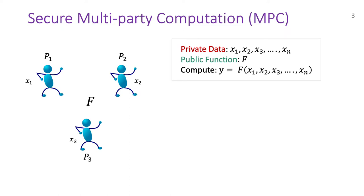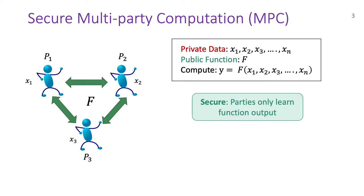Secure inference is a particular instance of MPC in the two-party context. In MPC, there are two or more parties which have some private inputs and they want to compute a public function F. MPC lays out a series of interactions between these parties and provides a mathematical guarantee that at the end of these interactions, parties only learn the output. Moreover, MPC is complete, that is, any function can be securely computed. Thus, we can do secure inference using MPC, in particular using two-party computation or 2PC.